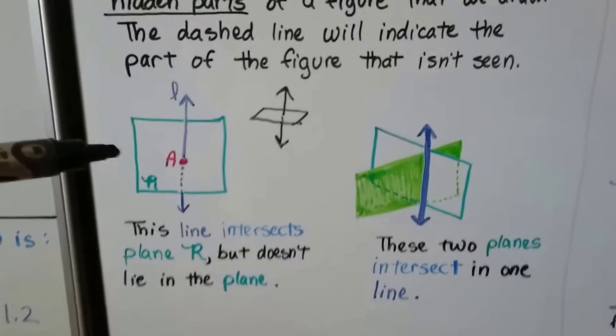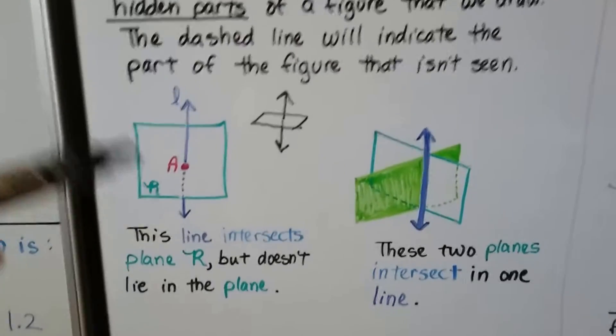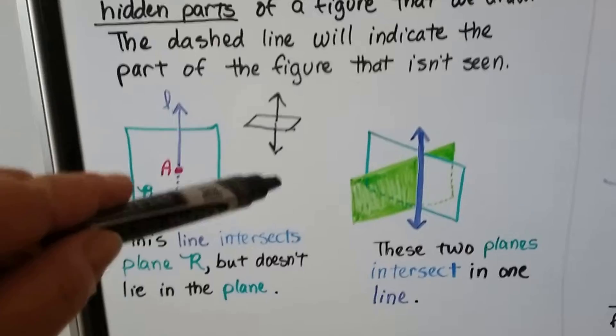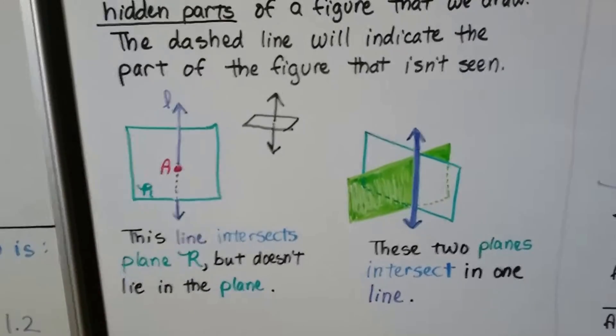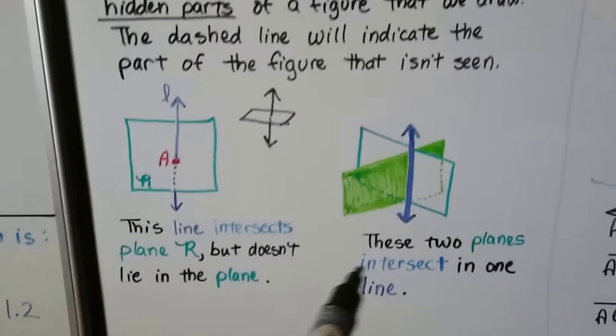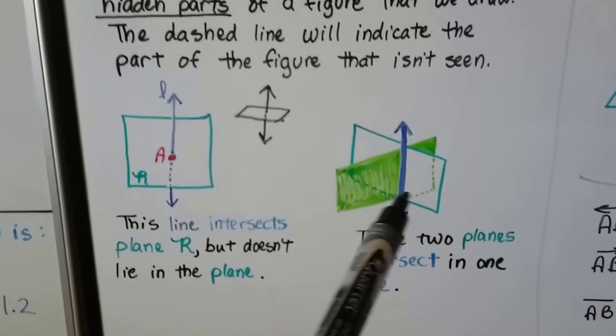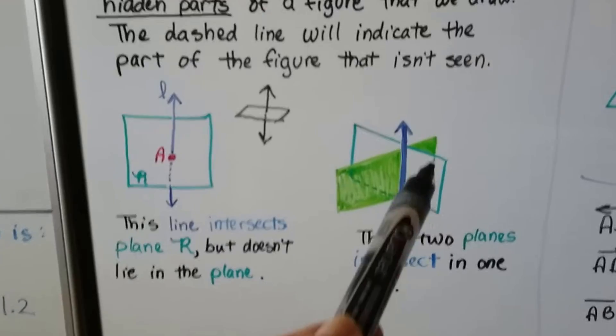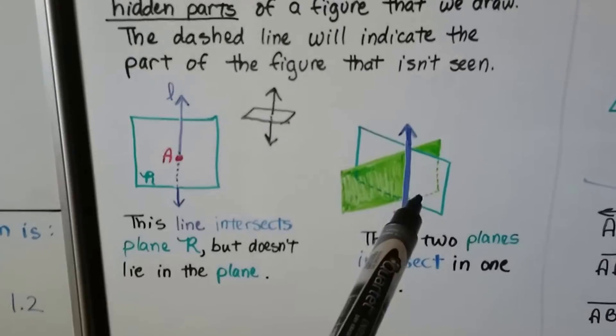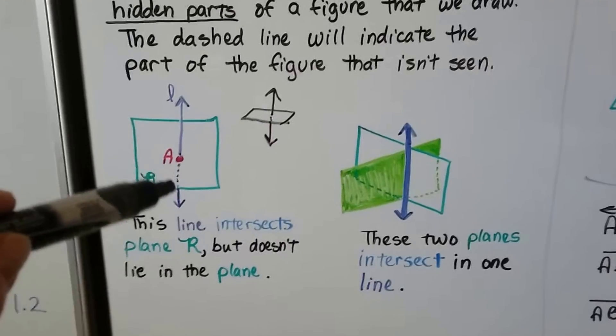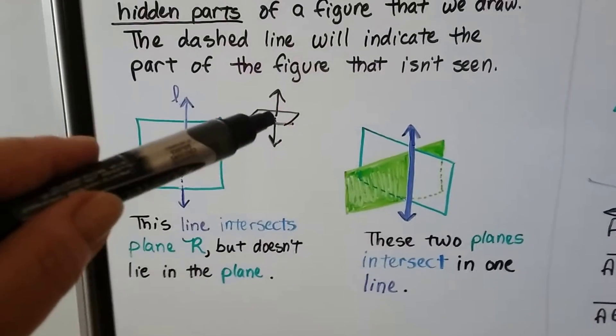So this line intersects plane R, but doesn't lie in the plane. So it's sort of going through the center like that. These two planes intersect in one line. And see how the dashed line is showing this lime green plane? Kind of like through the white plane. This one is showing that it's underneath this plane.